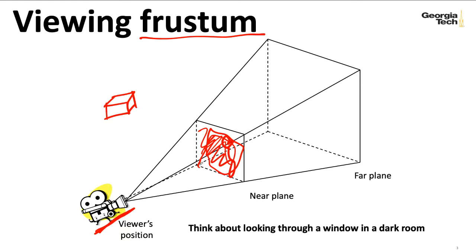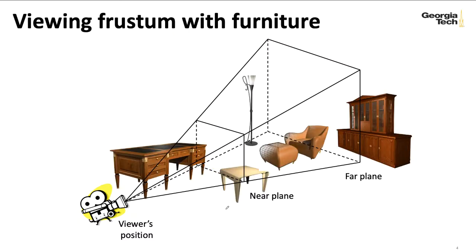You can imagine that you see a bunch of objects outside, and essentially you're in a dark room looking out at the things outside. You could imagine that this window is the near plane that things are going to be projected onto. So with both orthographic and perspective projection,